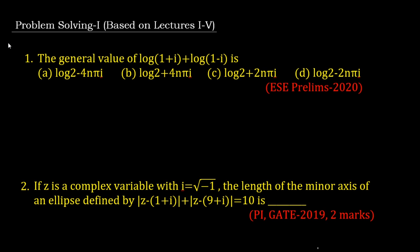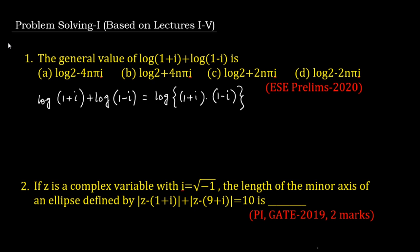The first problem: find the general value of log(1+i) + log(1-i). We have four options. This log is the natural logarithm with base e. Now, log(1+i) + log(1-i) can be written as log of (1+i)(1-i), since log(a·b) = log a + log b when the base is the same. So this becomes log(1-i²), which means log 2.